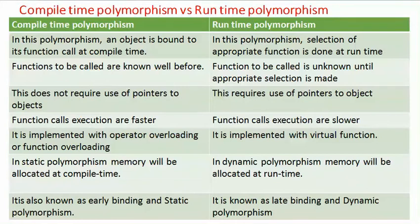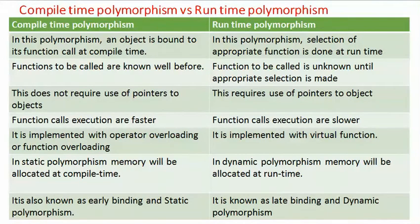Compile-time polymorphism is implemented using operator overloading or function overloading, while runtime polymorphism is implemented using virtual functions. In compile-time polymorphism, memory is allocated at compile time, whereas in runtime polymorphism, memory is allocated at runtime. Compile-time polymorphism is also known as static polymorphism or early binding, and runtime polymorphism is known as late binding or dynamic polymorphism.